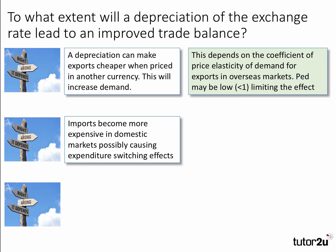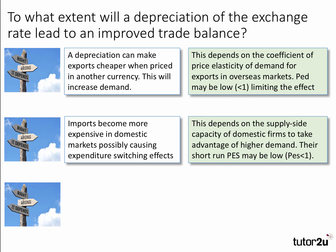The second point: imports become more expensive in domestic markets, possibly causing expenditure switching effects — a nice bit of theory there. However, this depends on the supply-side capacity of domestic firms to take advantage of the increase in demand. Their short-run price elasticity of supply may also be low — less than one — perhaps because they're already operating close to full capacity, or they have limited stocks of inputs available to increase production.